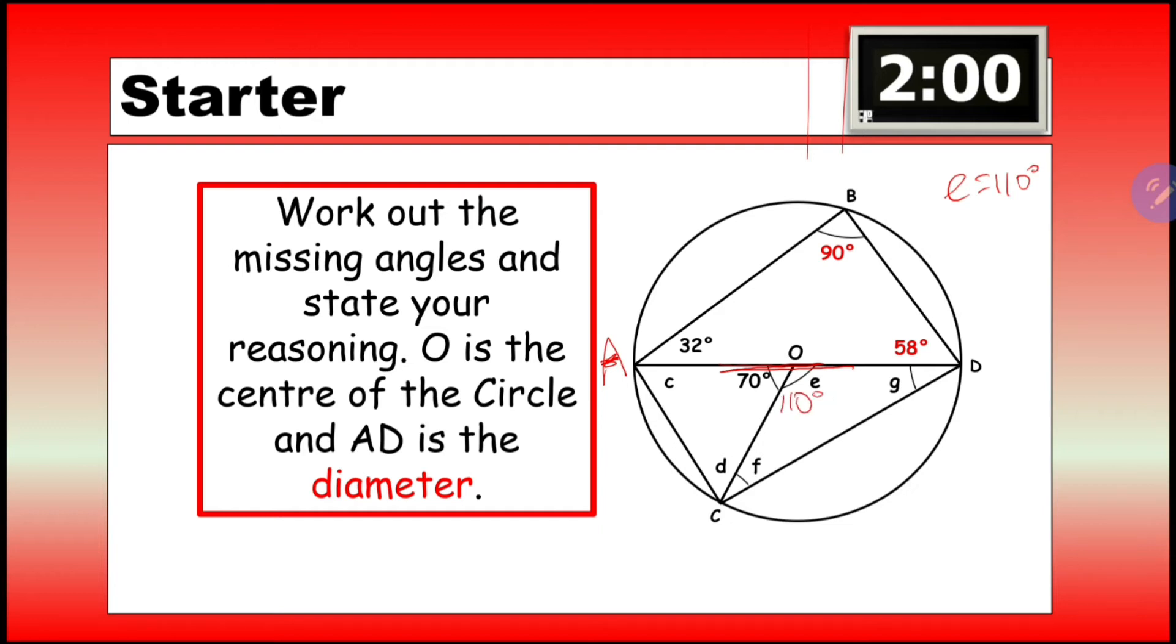And what we can see is that if this is the center of the circle, which is O, then this line going to the circumference and this line going to the circumference are both the same because going from the center to the circumference is a radius, and both of them start at the same place and end at the circumference. So therefore, we have an isosceles triangle, and F and G are exactly the same.